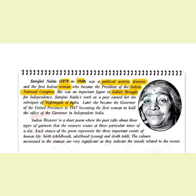That is why she is referred to as the Nightingale of India. You might wonder — she was not a singer. The word 'nightingale' here is not about singing, but about the beauty of her poems, the beautiful arrangements and the smallest words which give deeper meanings. In 1947, she became the governor of the United Provinces and was the first woman to hold the office of a governor after India became independent.